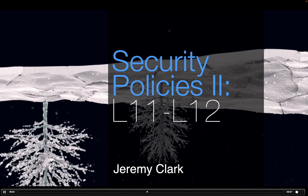As review: Netscape was an early internet browser and was the first to standardize a bunch of things we still have today. The basic principles are largely unchanged since 1994–95. In 1994 they invented cookies and wrote the browser code for handling them, along with a cookie policy dictating when to send or not send a cookie. The same origin policy came a year later, with a lot of overlap — origin is important to both.